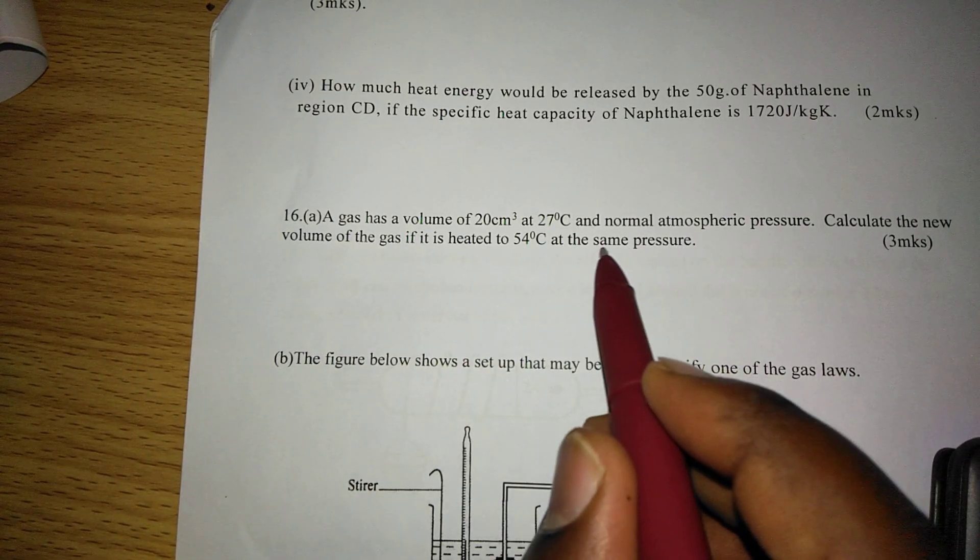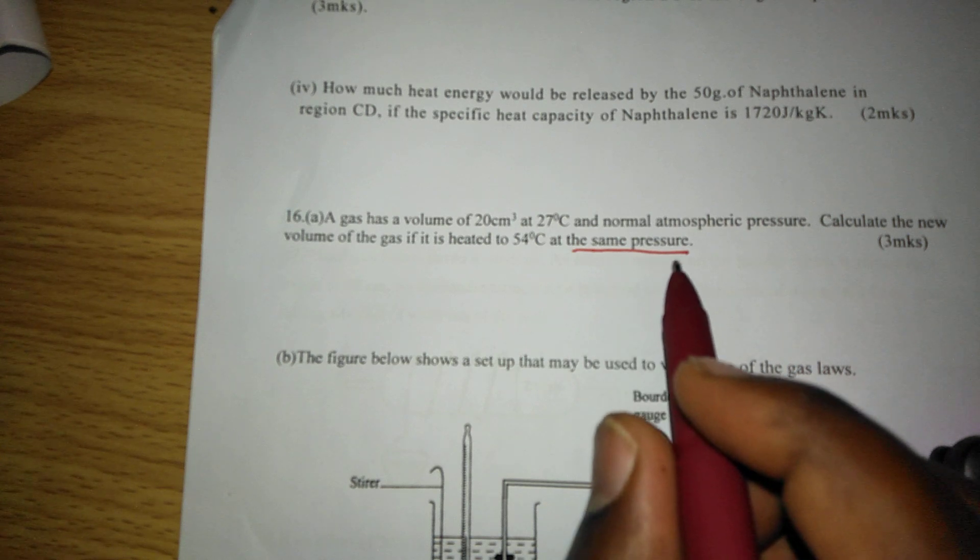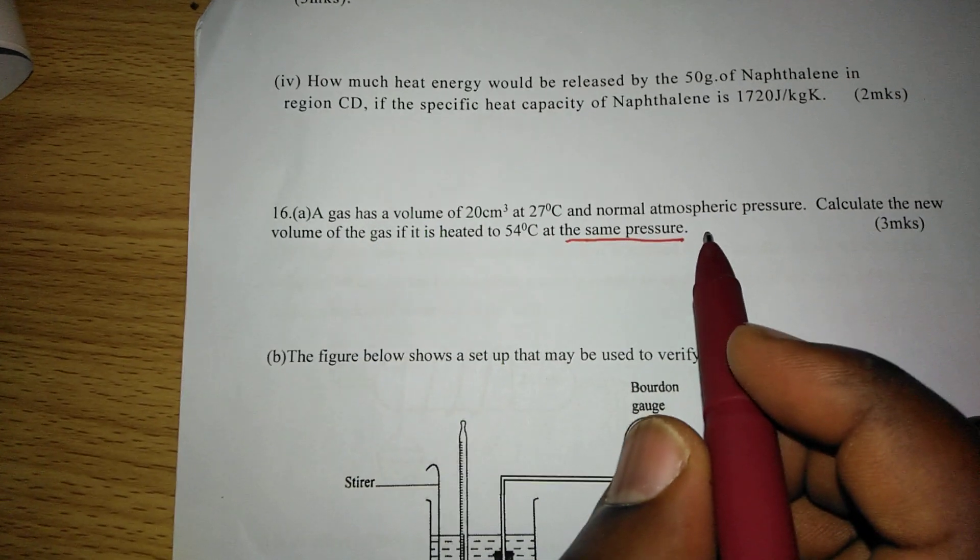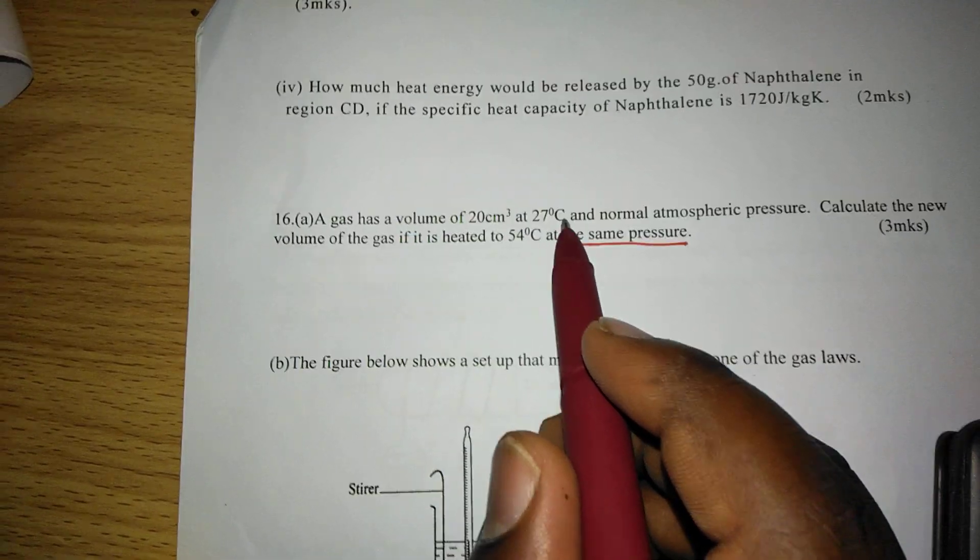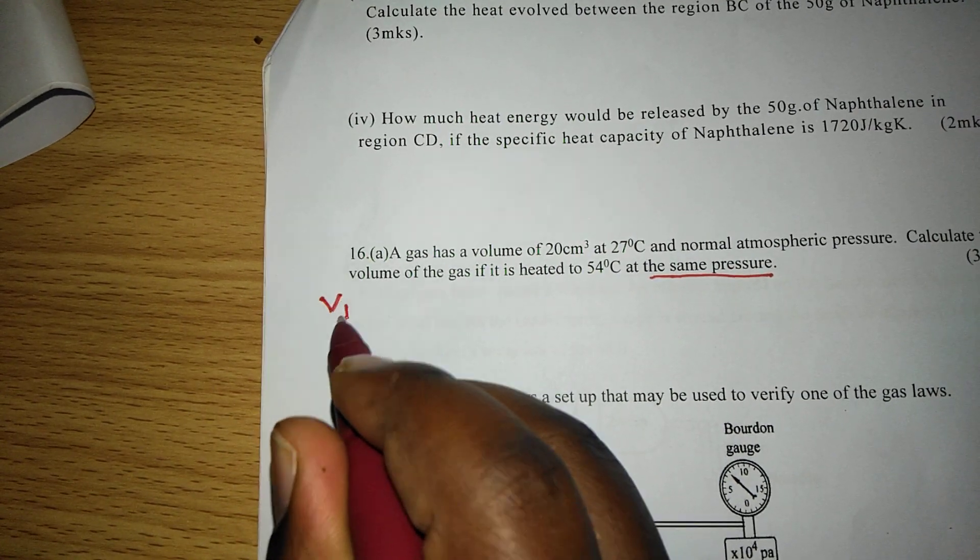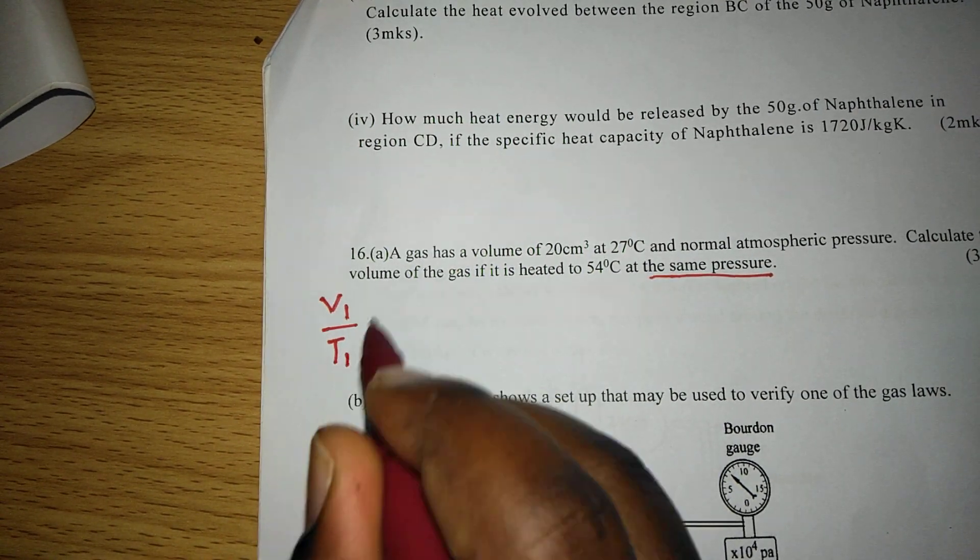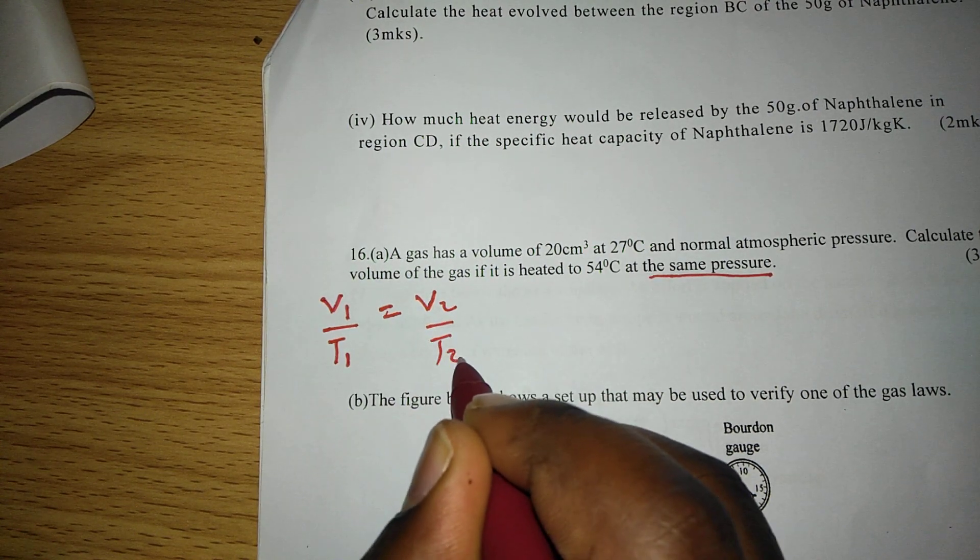Here we can see at the same pressure, meaning that pressure is constant. And when pressure is constant, then volume is being related with the temperature. The law which does that is Charles's law. And according to Charles's law, volume one divided by temperature one is always equal to volume two out of temperature two.